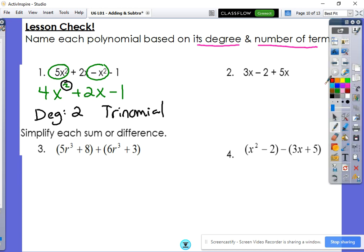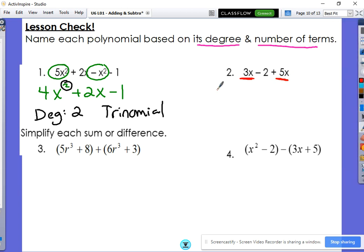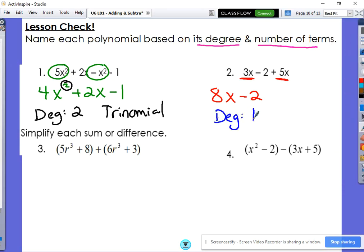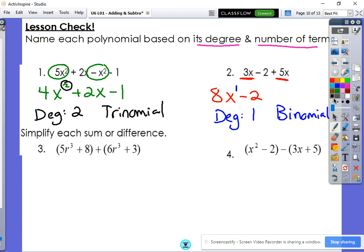All right. Here, if we combine like terms, these two are like terms. That should have given you 8x minus 2. So now this is a, our degree is 1. Our degree is 1, because there's an invisible 1 there. And this is a binomial. It only has two terms.